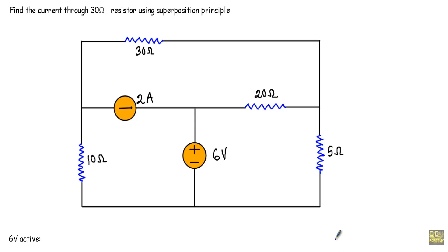In this video I will show you an example of the superposition theorem — find the current through a 30 ohm resistor using the superposition principle. This is our 30 ohm resistor, and I have to calculate the current through it for the given circuit using superposition principle. I will denote that current with I_not.